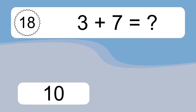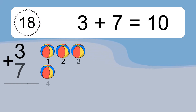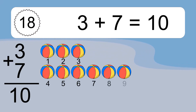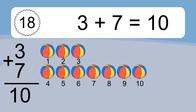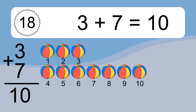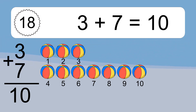3 plus 7 equals 10. Let's count it. 1, 2, 3, 4, 5, 6, 7, 8, 9, 10.